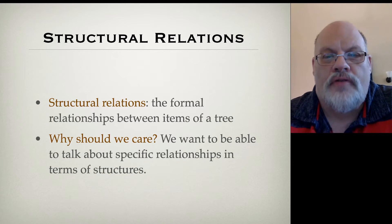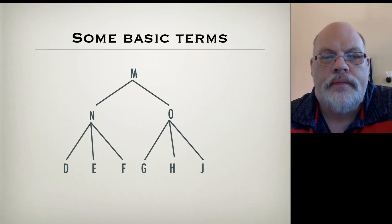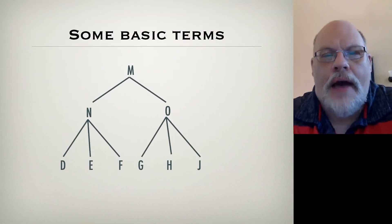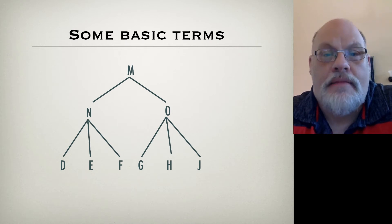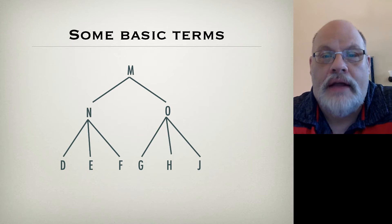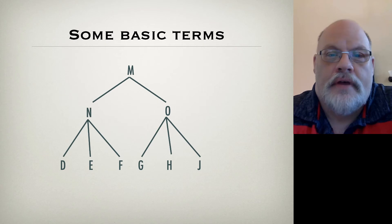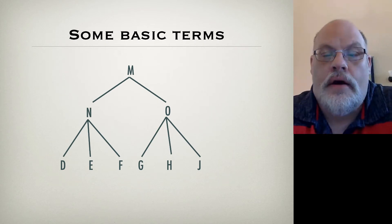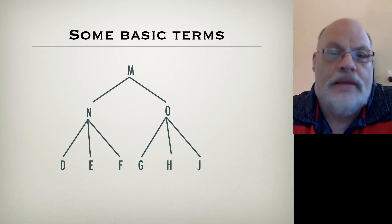Before we move into the structural relations themselves, I want to do a little bit of terminological information about the parts of a tree. Here we've got an abstract tree. I've deliberately left off categories like NP, VP, TP, or the heads — determiner, noun, etc. — because I want you to focus on the mathematical properties. The letters M, N, O, D, E, F, G, H, J, etc. are variables, and they stand for any possible category.